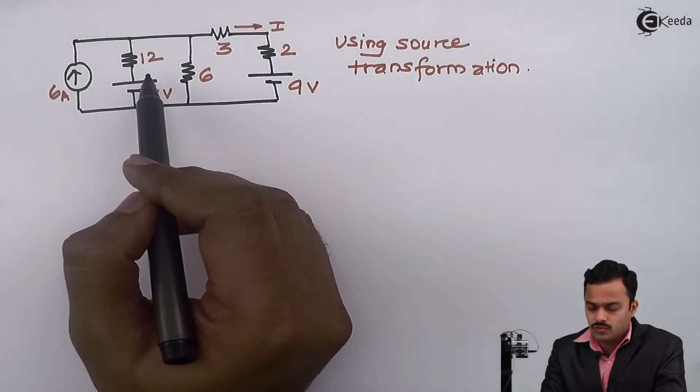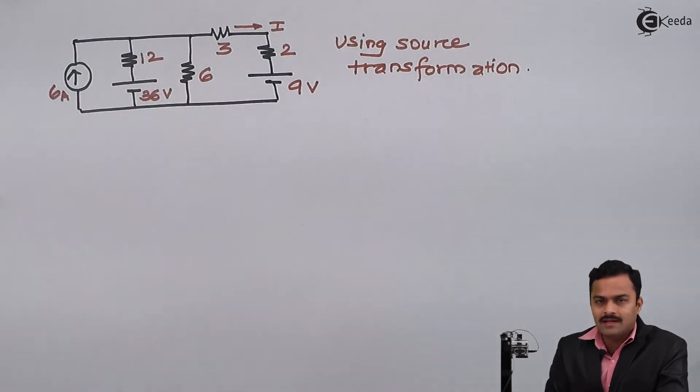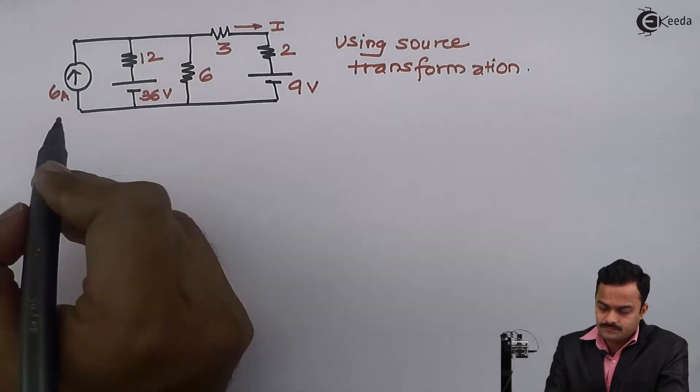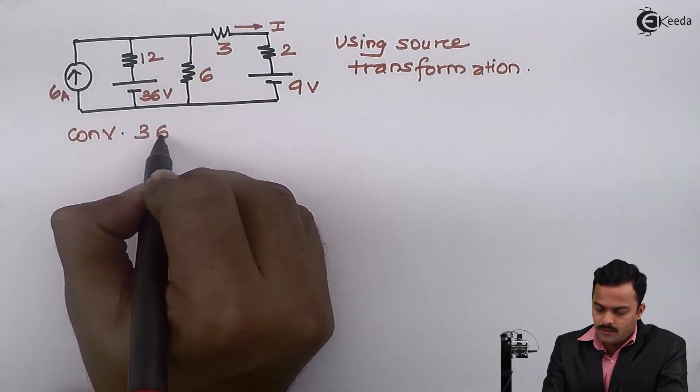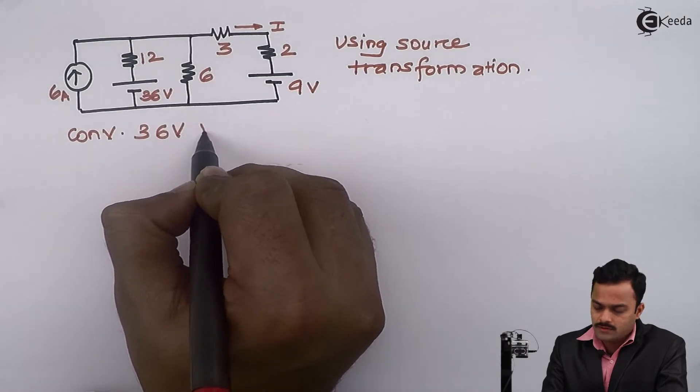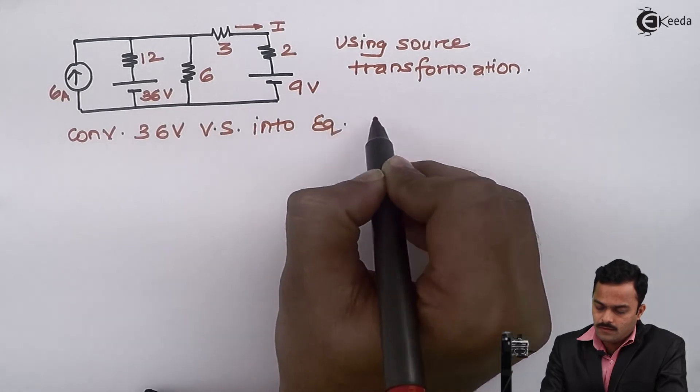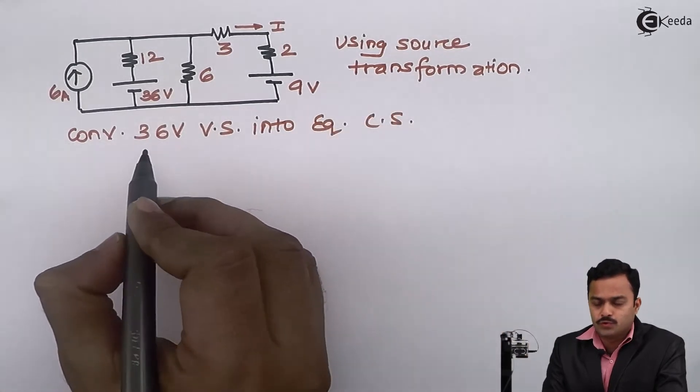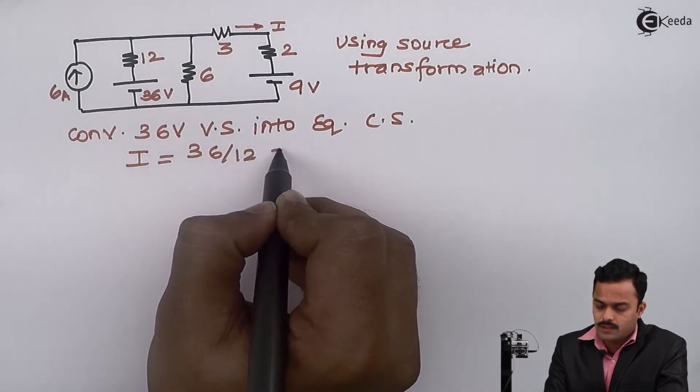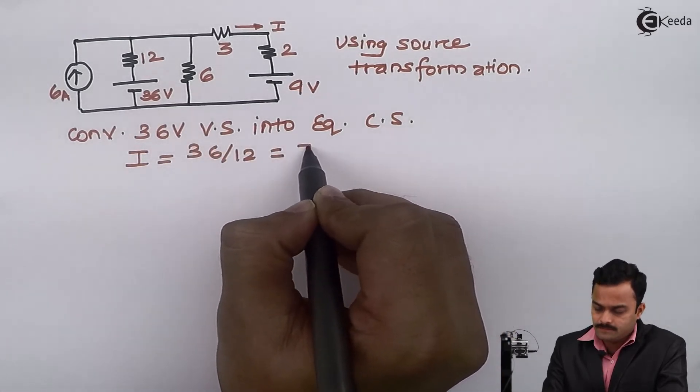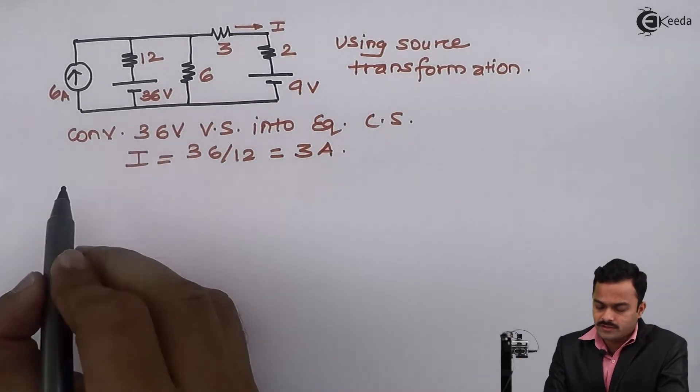I am converting the 36 volt voltage source into an equivalent current source. The value of current I is 36 divided by 12, which is 3 amperes. Let's redraw the circuit.